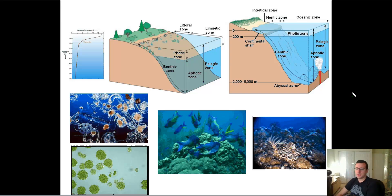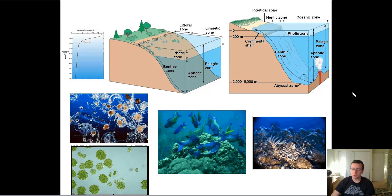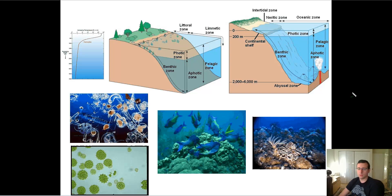Finally, we have the ocean ecosystems, which are the most common ecosystems in the world. 71% of the world is pretty much covered with marine ecosystems, since the oceans cover the majority of the planet.